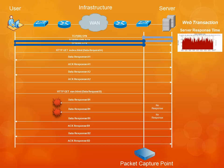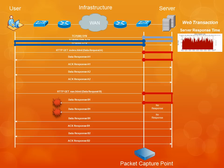Now we get to our core metrics. The first is server response time, which is defined as the amount of time it takes a server to start responding to a request. This is measured by taking the delta between the receipt of a request from the user and the first packet of the response from the server. Since we know that the server will have gathered all of the data for the response before starting to send it out, we know that the server has finished processing the request.